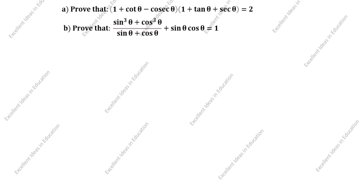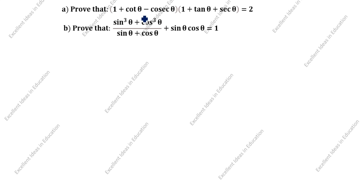Hi friends, welcome to my channel Excellent Ideas in Education. Today we are going to solve this trigonometry identity problem. First one: prove that (1 + cot θ − cosec θ)(1 + tan θ + sec θ) = 2. Now we will prove LHS equal to RHS.